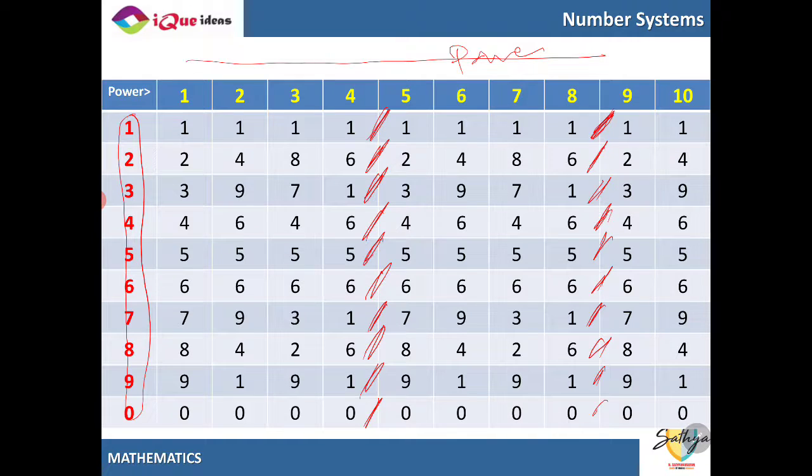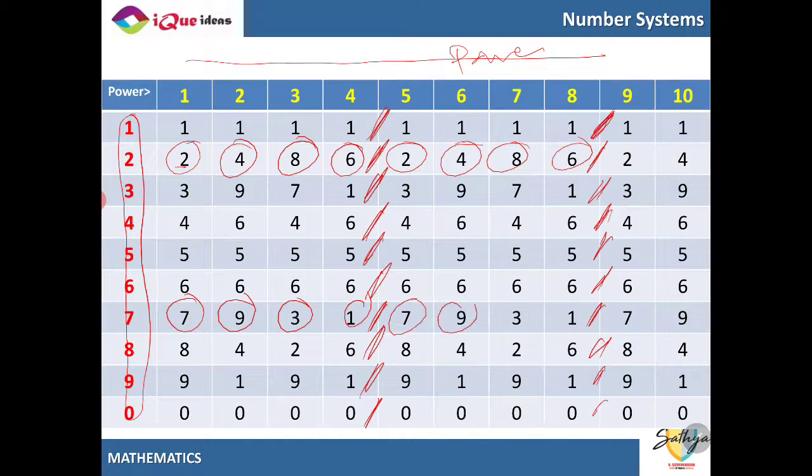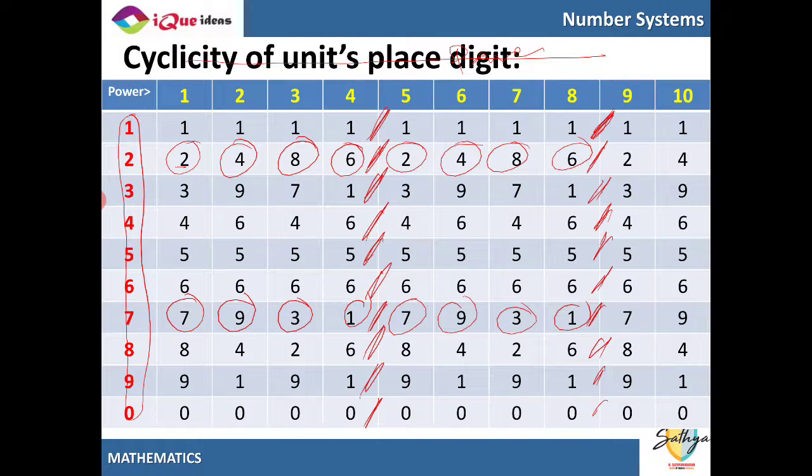That means for 2, 2, 4, 8, 6, then again the unit's digit repeats as 2, 4, 8, 6. Similarly for 3, 4, 5, 6. Again for 7, 7, 9, 3, 1, 7, 9, 3, 1, 7, 9 and so on and so forth. So we can use this property to identify the unit's digit of even large powers, right?